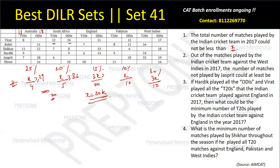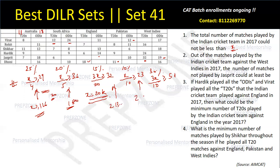Continuing: for Pakistan, 12 + 11 = 23, so x/10 ≥ 23. For West Indies, 32 + 19 = 51, so 3x/10 ≥ 51. Simplifying all: x ≥ 29×4 = 116; x ≥ 36×5 = 180; x ≥ 32×20/3 ≈ 213; x ≥ 23×10 = 230; and from West Indies: x ≥ 170. The maximum of all these constraints gives x ≥ 230.